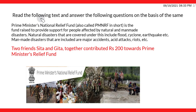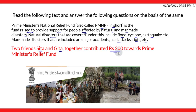Here is a question on the screen: read the following text and answer the questions on the basis of the same. Prime Minister's National Relief Fund, also called PMNRF, is the fund raised to provide support for people affected by natural and man-made disasters. Natural disasters covered include flood, cyclone, earthquake, etc., and man-made disasters include major accidents, acid attacks, riots, etc. Two friends, Sita and Gita, together contributed rupees 200 towards the Prime Minister Fund.